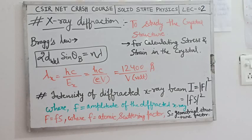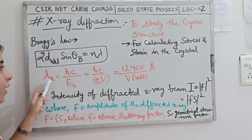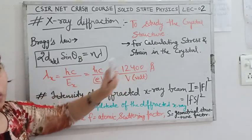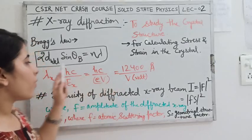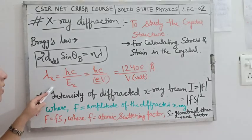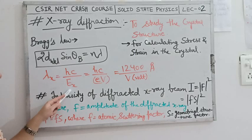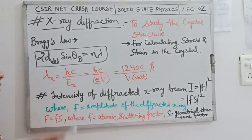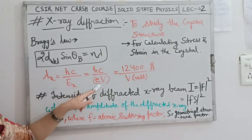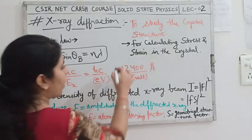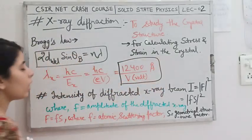The wavelength of X-rays can be calculated using λ = hc/Ex, where Ex is the energy of the X-ray and Ex = eV. Solving gives λ = 12400/V Angstroms, where V is the potential in volts. This is the final formula to remember for finding the wavelength of X-rays.